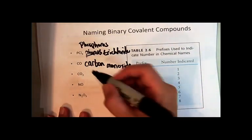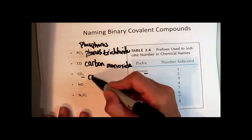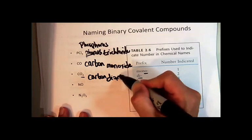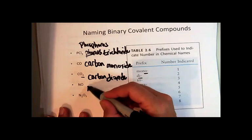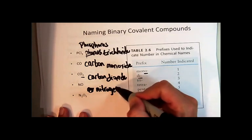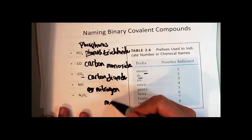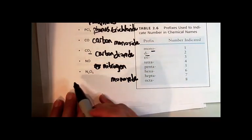In this case, it's carbon. There's two oxygens, so I use the di. Carbon dioxide. In this case, nitrogen monoxide, it's telling me that there's one oxygen, again, monoxide.